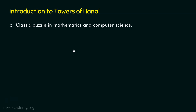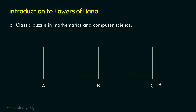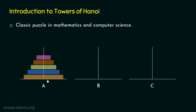The myth is that the priests of the temple are working on a set of 64 golden discs stacked on one out of three pegs, or what we call towers. There are three pegs — A, B, and C. Out of these three pegs, one has all 64 discs placed on it. The goal is to move all these discs from one peg to another peg; let's say from peg A to peg B.